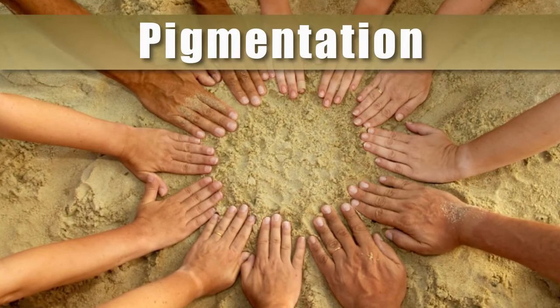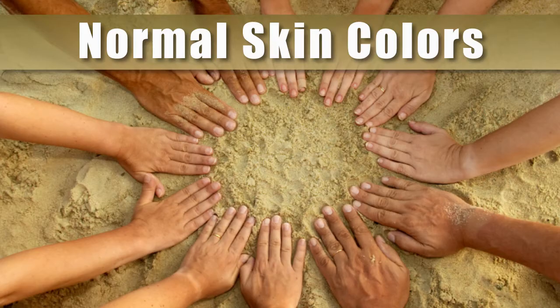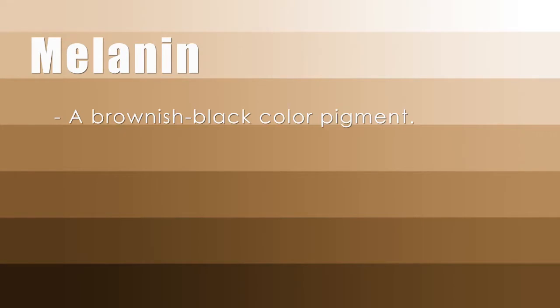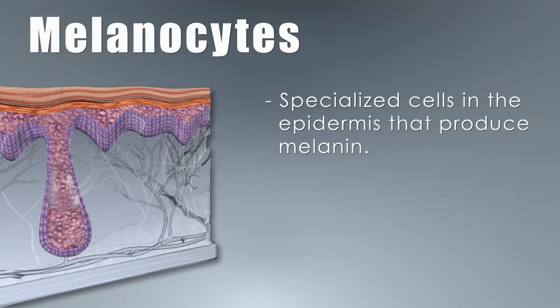Pigmentation is a term used in the coloring of the skin, hair, and retina of the eye. Let's take a look at some of our normal skin colors. Melanin, which is a brownish black color pigment, determines the color of the skin. The more melanin produced, the darker the skin is. This is created by specialized cells in the epidermis called melanocytes. Melanin, in smaller concentrations, is responsible for freckles.